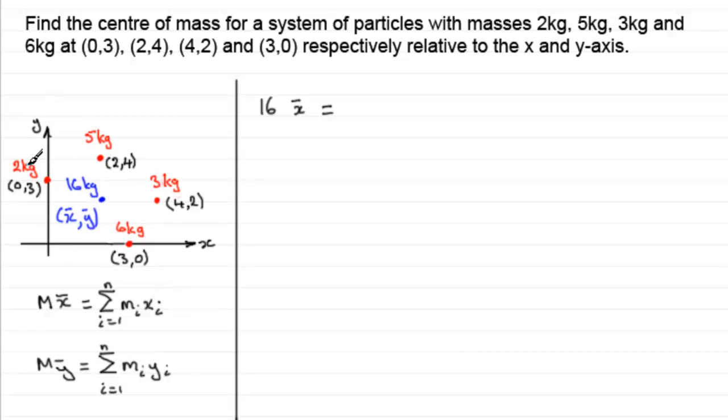So it would have been, say, 2 multiplied by its distance to the y axis, which would have been 0. Plus the 5kg mass, 5 times the distance to the y axis, which is 2. Plus 3 times the distance to the y axis, 3 times 4. And finally, we would add the 6kg mass times its distance to the y axis, which would be 6 times 3.